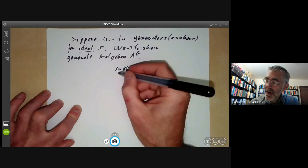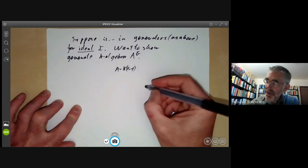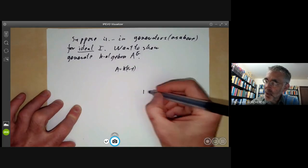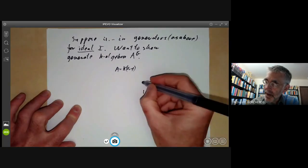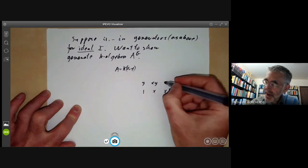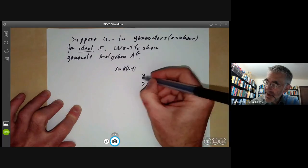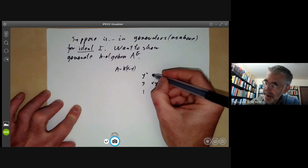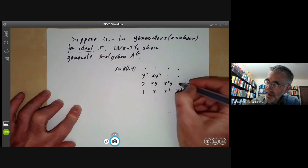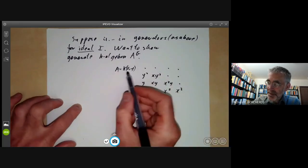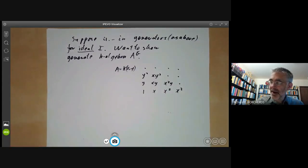A is k[x,y]. Now I'm going to draw k[x,y] by drawing a point for each monomial. So we have the monomial 1, x, x squared, x cubed, y, xy, x squared y, y squared, xy squared and so on. So you can think of all the basis elements for this algebra A as being represented by points in a quadrant.